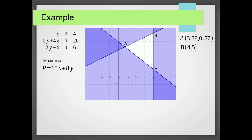In a similar manner, we can find that B equals 4, 5, and that C equals 4, 0.8. We now substitute each of these x and y values into our objective function, p equals 15x plus 8y.